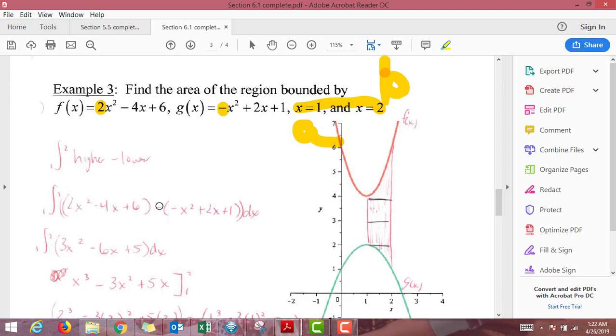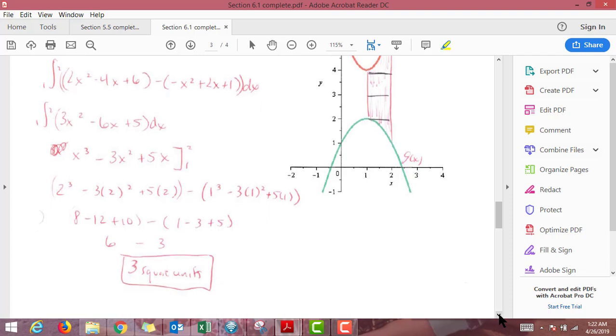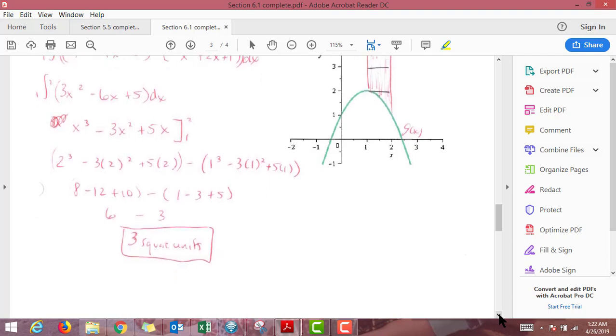So we have higher minus lower. We do need parentheses here because the negative is going to affect it. We're going to combine like terms, and then we're ready to integrate. We apply the reverse power rule and simplify along the way. Then we need to plug 2 into the whole thing minus parentheses plug 1 into the whole thing, and we end up getting 3 square units.